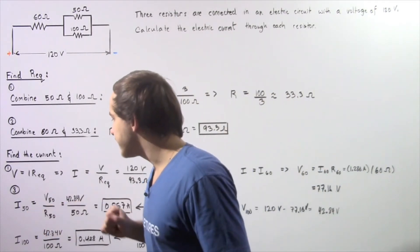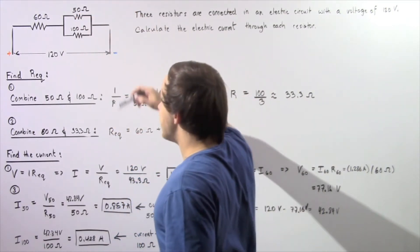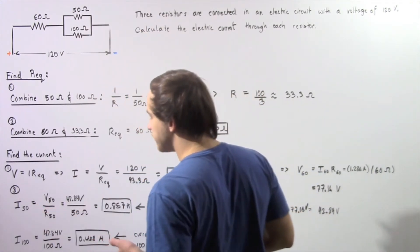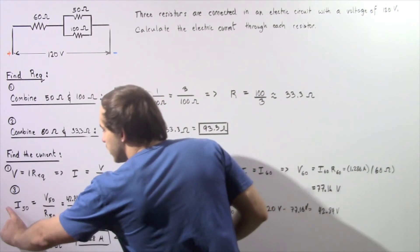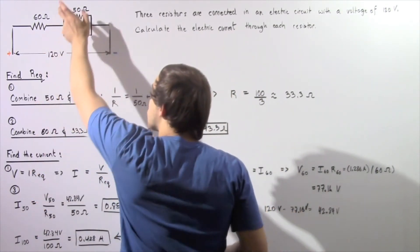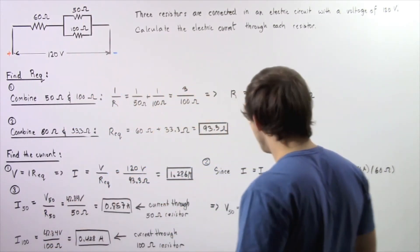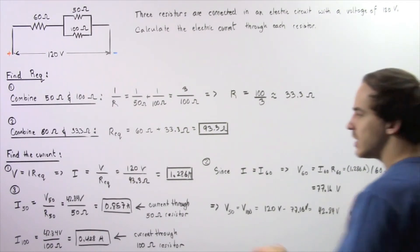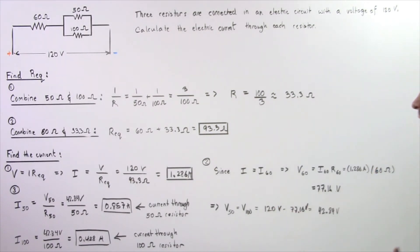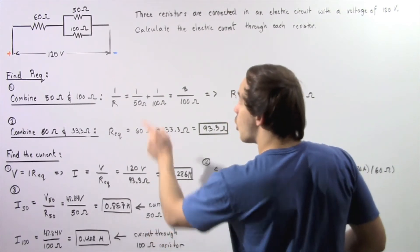Now we want to calculate what the current is that flows through each of the parallel resistors. Applying Ohm's law, the electric current through the 50 ohm resistor is equal to the voltage across that resistor divided by the resistance. So 42.84 volts divided by 50 ohms gives us about 0.857 amps. This is the electric current flowing through the 50 ohm resistor.